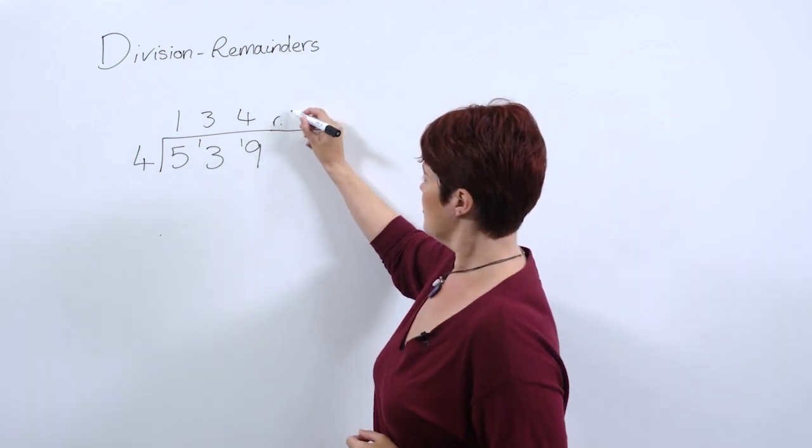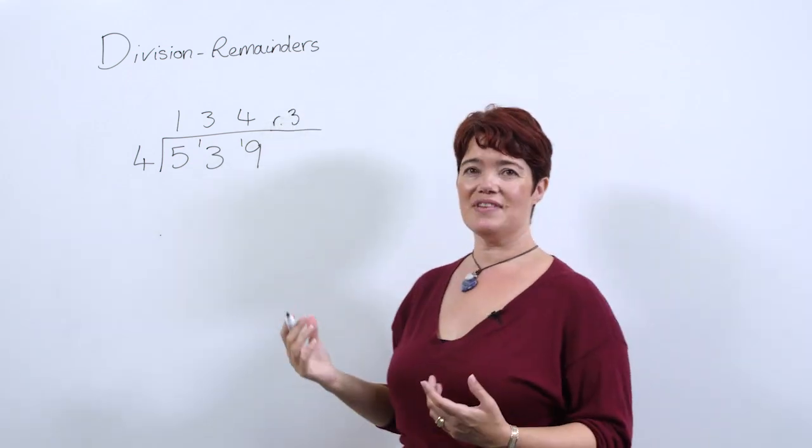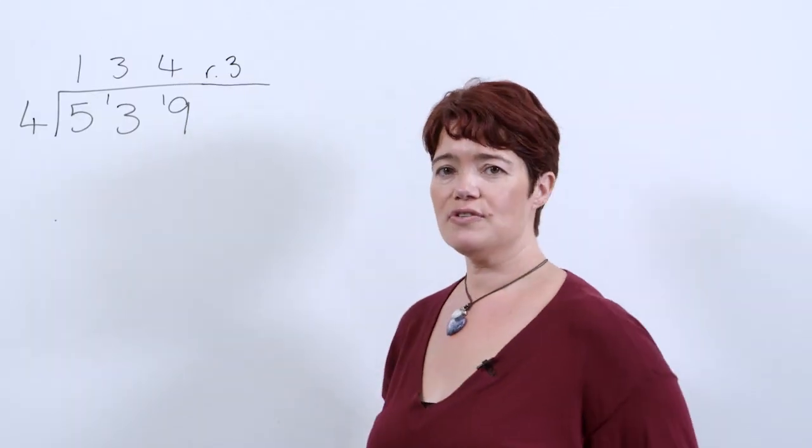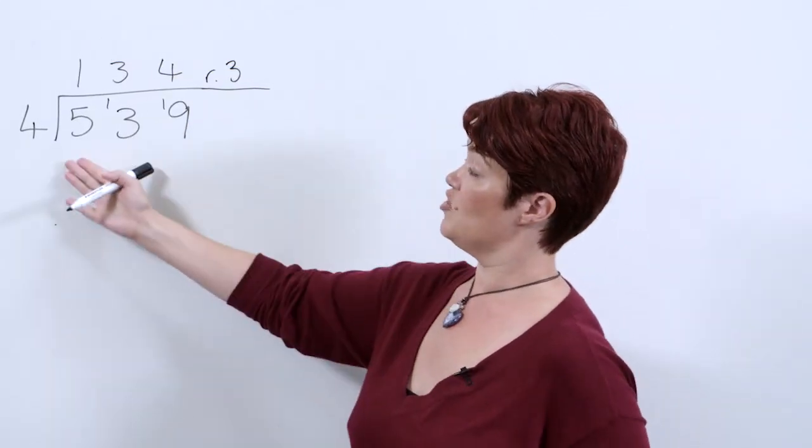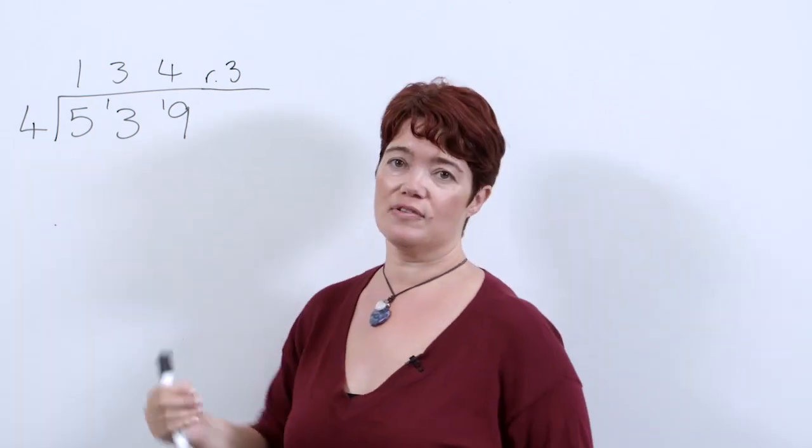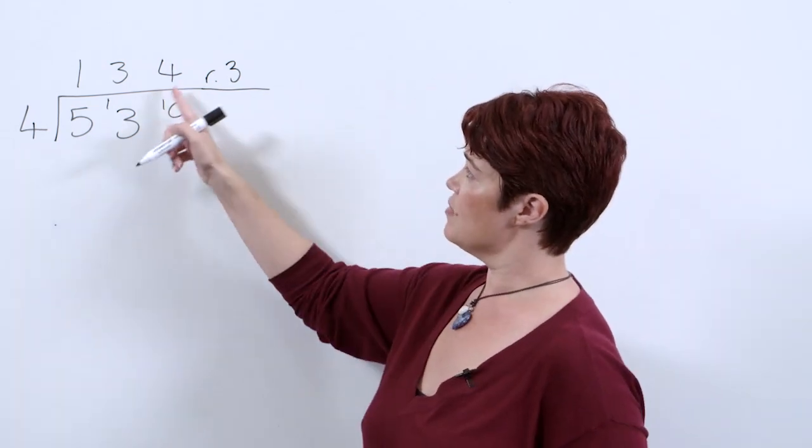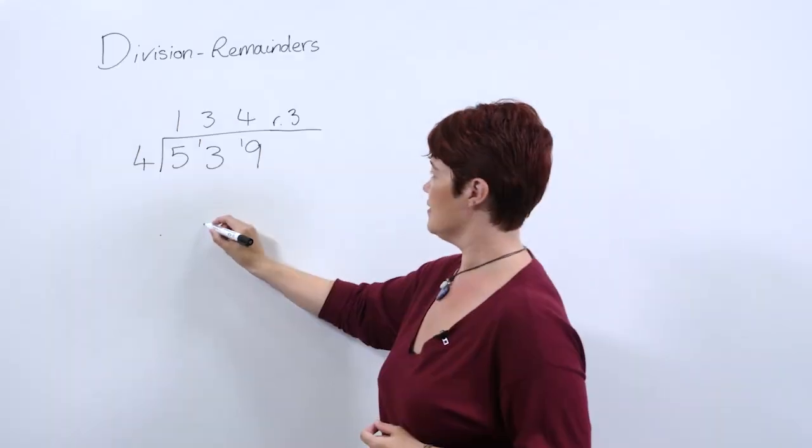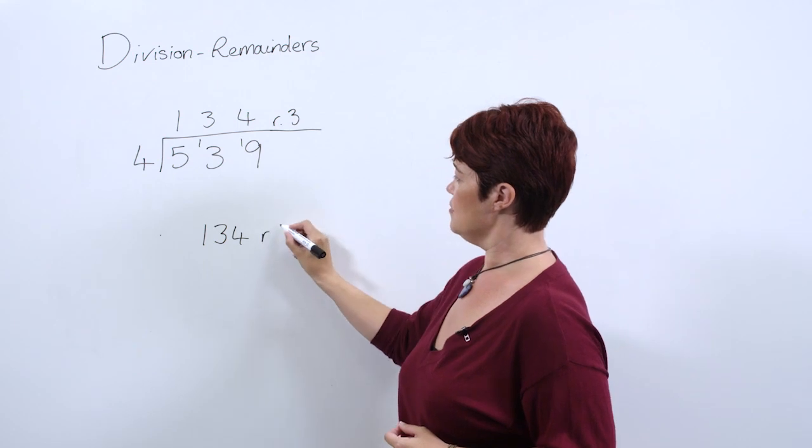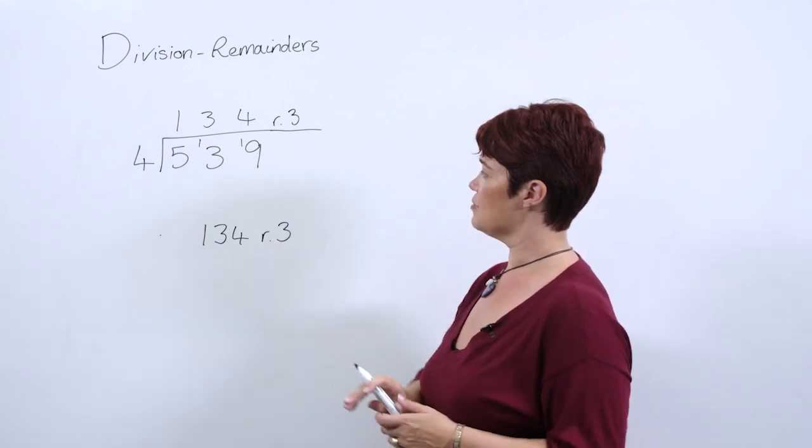First way of writing it: remainder 3. This is leaving it as a number. This is really useful in the context of dividing people into groups. So if you're dividing 539 people into groups of four, we'd have 134 groups of four and one group that had three people in it. So that's our first way of writing it: 134 remainder 3.